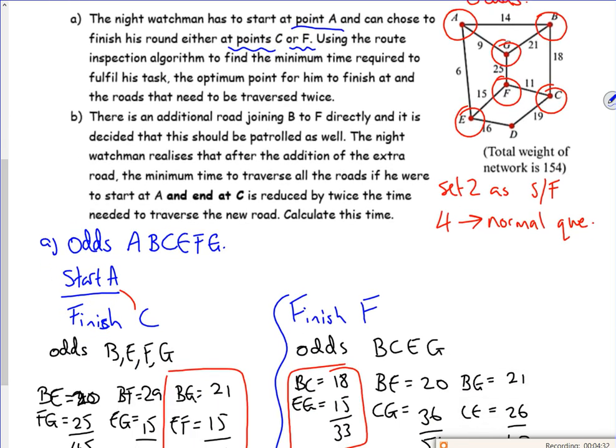Part B says there's an additional road joining B to F directly. So I've got an additional road there from B to F.